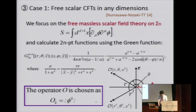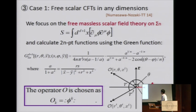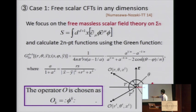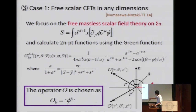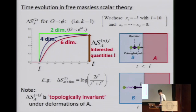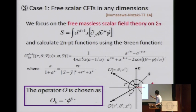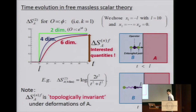Even though entanglement entropy is a complicated quantity, the calculation just reduces to computing a 2N-point function, but on an N-sheeted surface rather than flat space. In general this calculation is quite hard except in two dimensions. The first and simplest case we want to compute is the free massless scalar field case — delta phi times delta phi — where we know the Green function exactly. We can choose the operator used for excitation to be just phi to the k-th power, the product of k scalar fields.